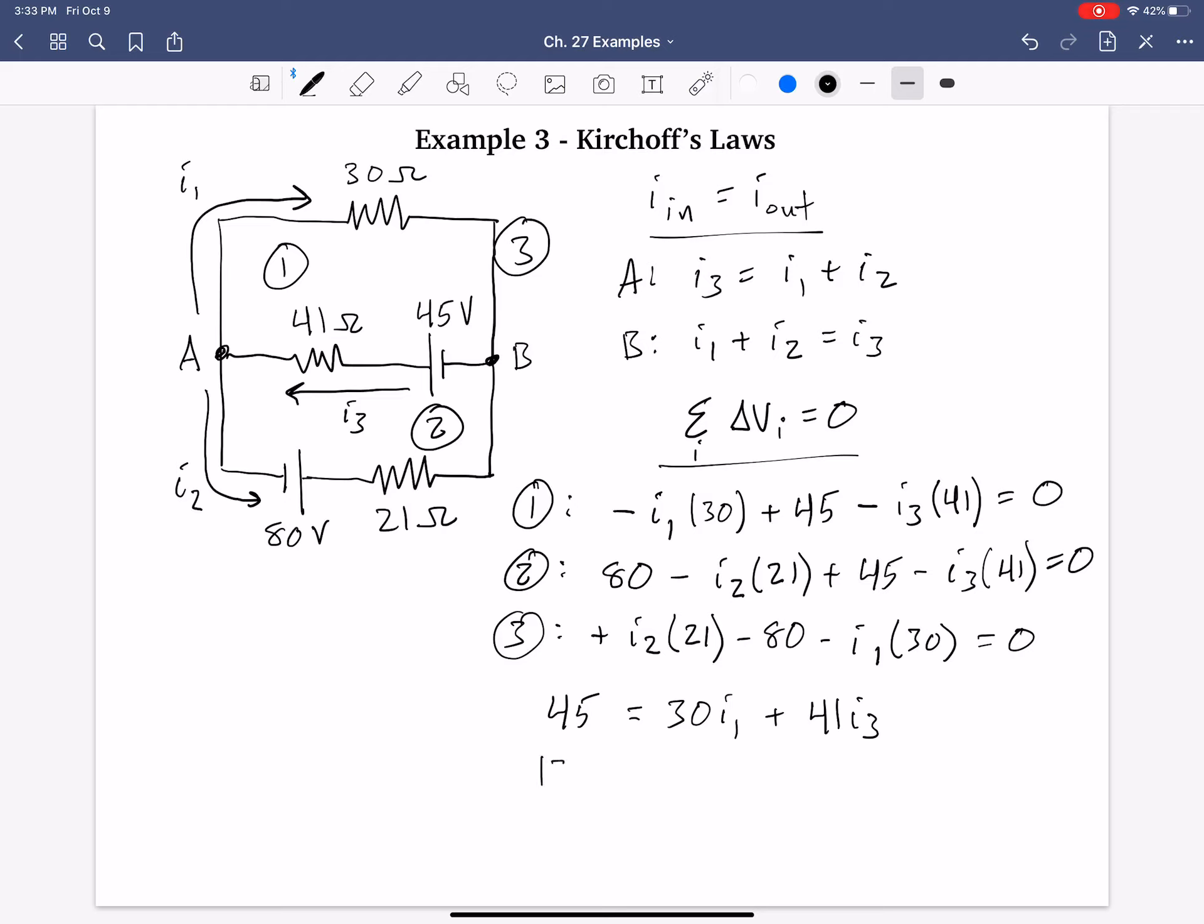And the next equation, combining 80 and 45, we have 125. And then bringing the IR terms to the right side, we have 21 I2 plus 41 I3. And then the third equation, we just have 80, so I'll bring that to its own side. And then keeping the IR terms as is, we have, I don't like a negative leading negative, but I want to keep the currents in numerical order. So let's do negative 30 I1 plus 21 I2. And this is a little more clear, a little more concise.